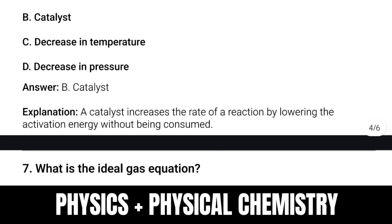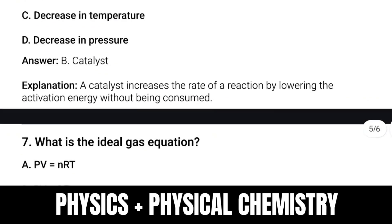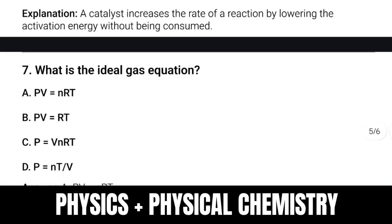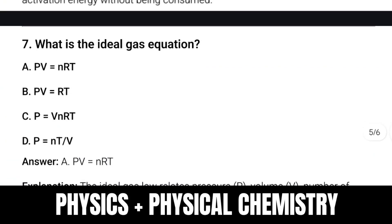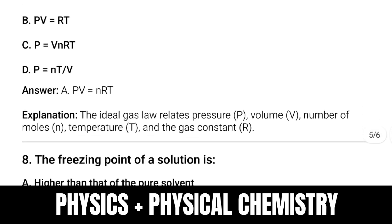Question number seven: What is the ideal gas equation? The ideal gas equation is PV = nRT. The ideal gas law relates pressure, volume, number of moles, and temperature.